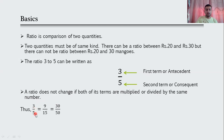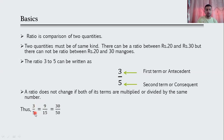9 upon 15 is the same as 3 upon 5. Similarly, multiplying numerator and denominator by 10 gives 30 upon 50, which is also the same as 3 upon 5. So if you multiply or divide numerator and denominator with the same number, the ratio will not change.